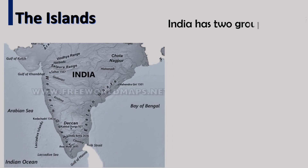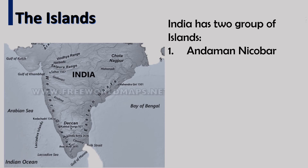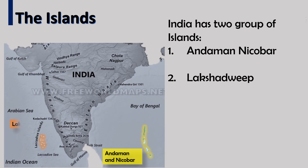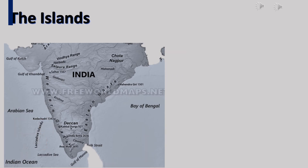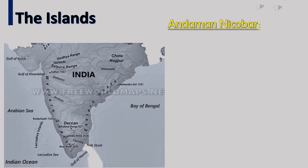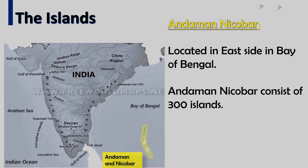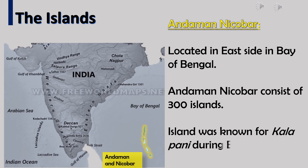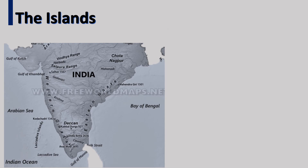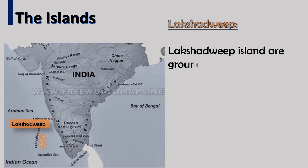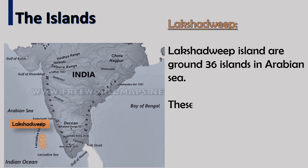India has two groups of islands. First, Andaman and Nicobar in the east, and second, Lakshadweep in the west. Andaman and Nicobar islands are located on the east side in the Bay of Bengal and consist of around 300 islands. These islands were known as Kalapani during British rule. Lakshadweep islands are around 36 islands in the Arabian Sea and are made up of corals.